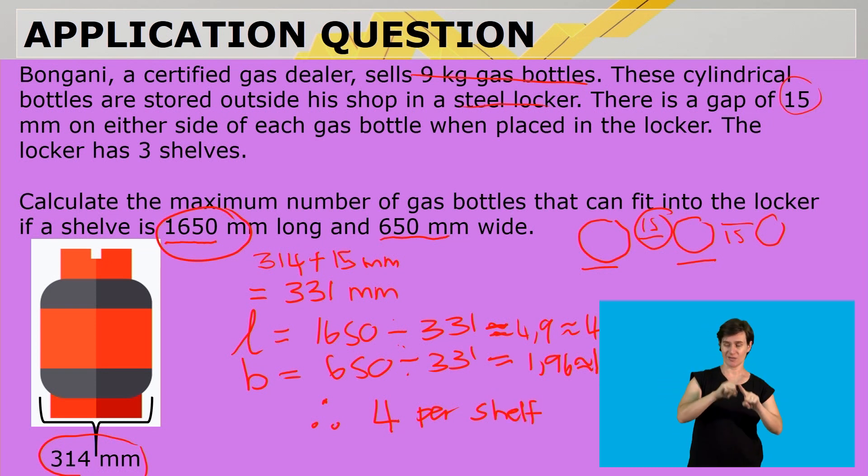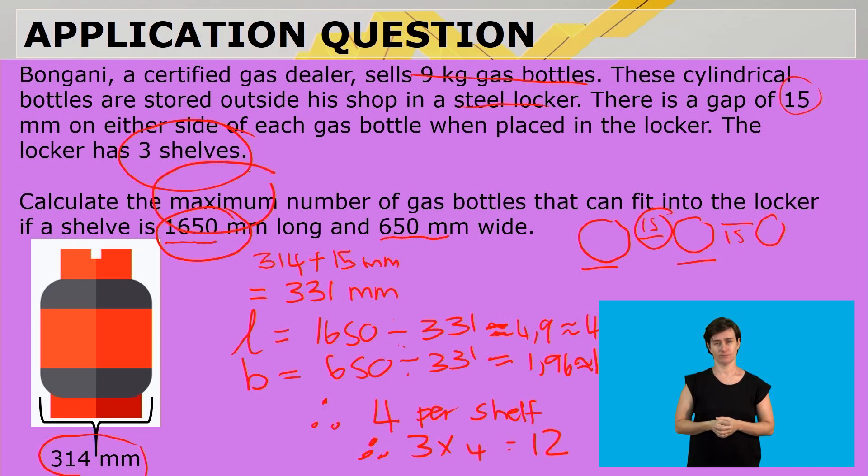Therefore, there is going to be 4 per shelf. And remember, we've got 3 shelves, so it's going to be 3 times 4, which is 12. So the maximum number will be 12.